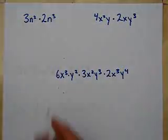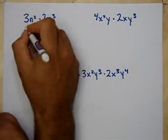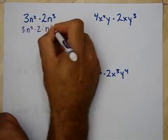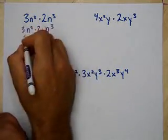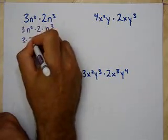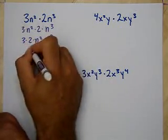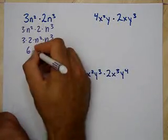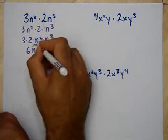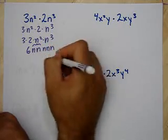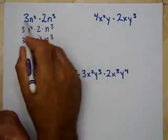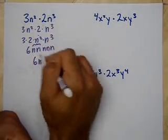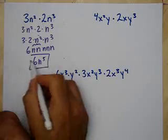So let's do these guys out. 3n squared times 2n cubed — that's 3 times n squared times 2 times n cubed. I can rewrite this because of commutativity: 3 times 2 times n squared times n cubed. 3 times 2 is 6. n squared times n cubed is n to the 5th. So I get 6n to the 5th. A lot of times when multiplying, you just say 3 times 2 is 6, and n squared times n cubed makes n to the 5th.